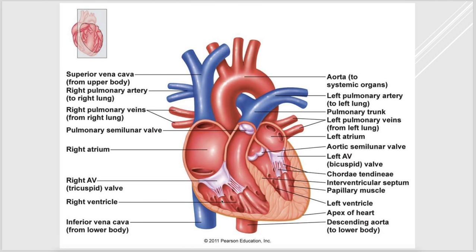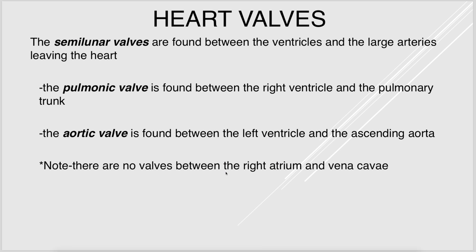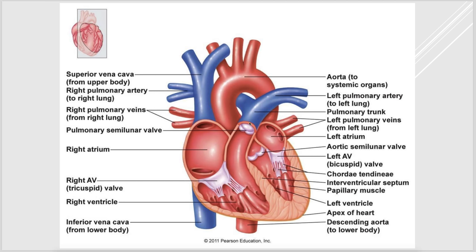The papillary muscles, chordae tendineae, and the valve itself can be seen in the diagram. The tricuspid valve is on the right side, and the bicuspid or mitral valve is on the left side. The semilunar valves are between the ventricles and the large vessels leaving the heart: the pulmonic valve is between the right ventricle and the pulmonary trunk, and the aortic valve is between the left ventricle and the aorta.